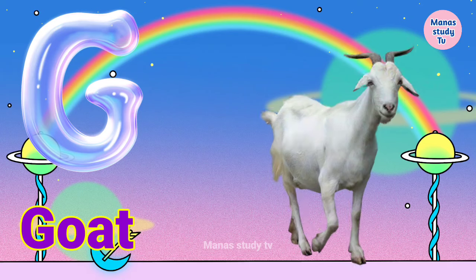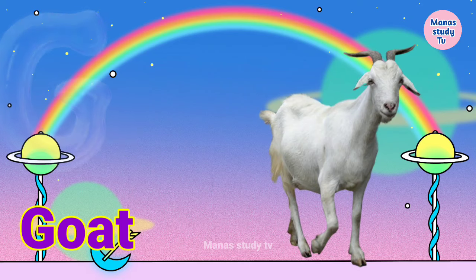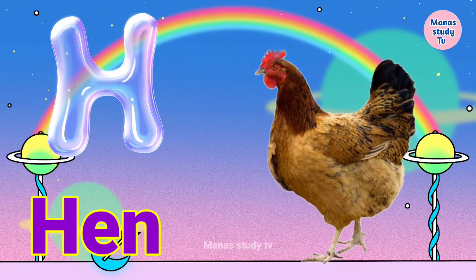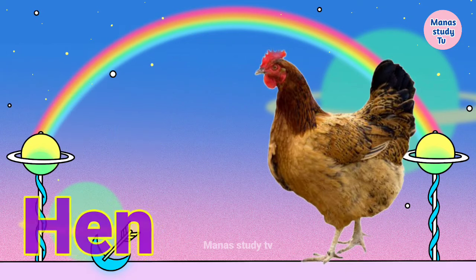G. G for goat, goat means bakari. H. H for hen, hen means mulgi.